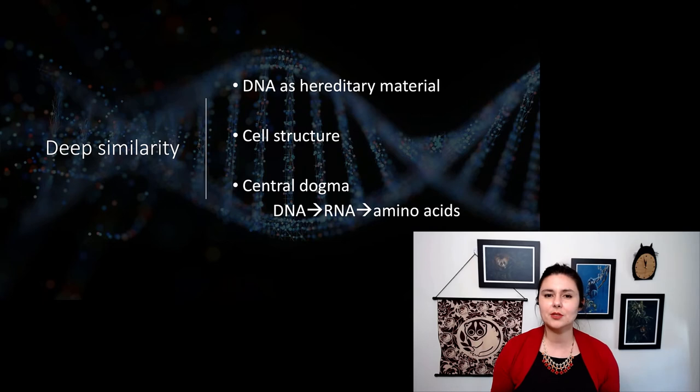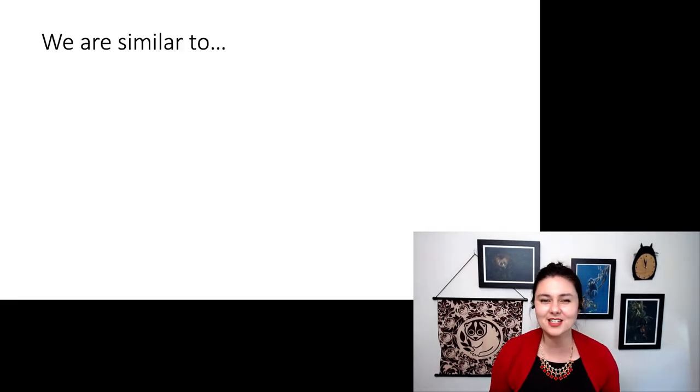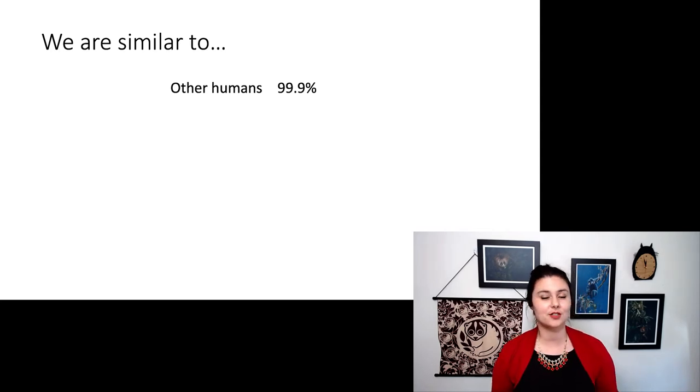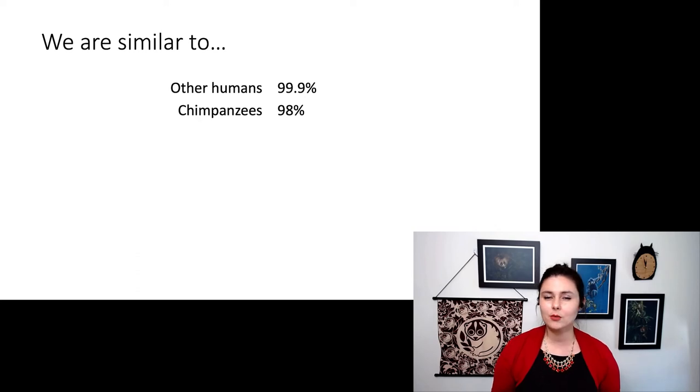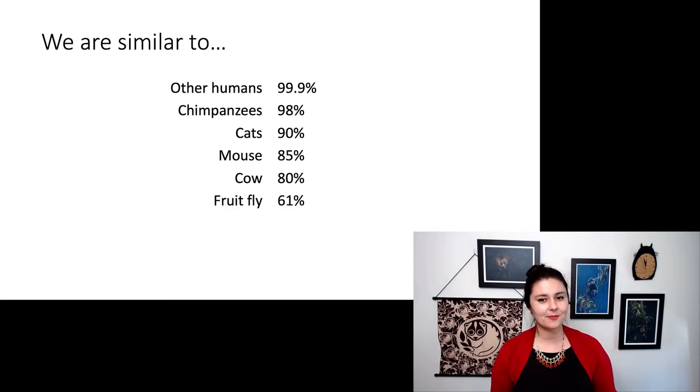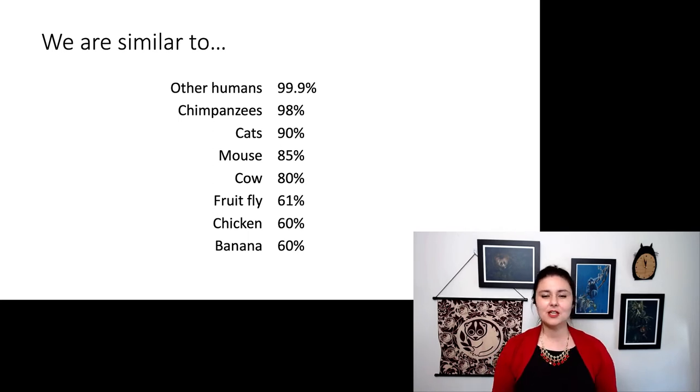But we can also use the term deep similarity and not go quite all the way back. We can compare ourselves to different organisms as well. So if we want to compare and maybe make a percentage out of it, we're about 99.9% similar to other humans. So all of us, even though we like to discriminate based on skin color and other things, we are very similar to each other. When we're comparing ourselves to chimpanzees, we're about 98% similar. Cats are 90. Mice are 85%. Cows are 80. Fruit flies are 61%. Oddly, chickens are 60%. And bananas are about 60%. You might think it's a little bit weird that we are a little bit more similar to fruit flies than chickens. I think this says a little bit more about just how weird chickens are than anything else. And keep in mind that these percentage estimates are gross oversimplifications. So I wouldn't take these too seriously. Just use this as a marker for about how similar we are to different things.